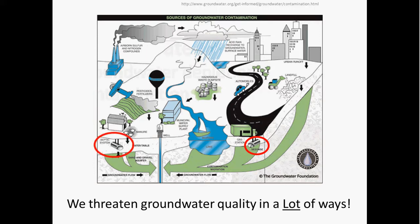Septic systems are wastewater disposal systems that are not connected to city sewer systems. They are designed to slowly drain away human waste underground at a slow rate. But if they're not designed correctly, or if something goes wrong, they can contaminate groundwater by leaking pathogenic bacteria, household chemicals, or other contaminants.